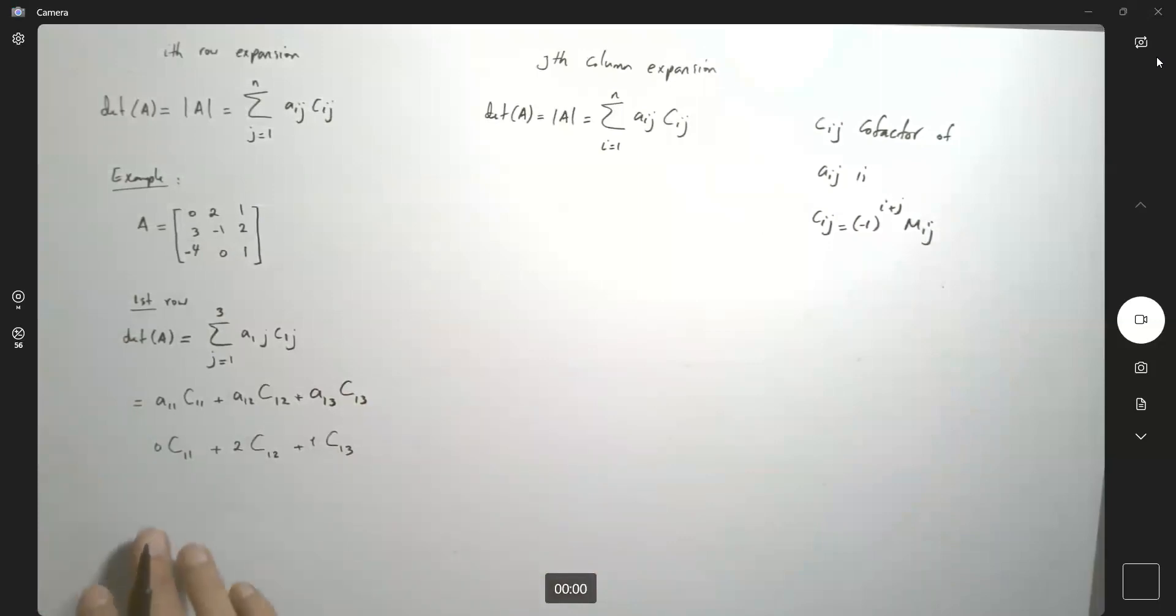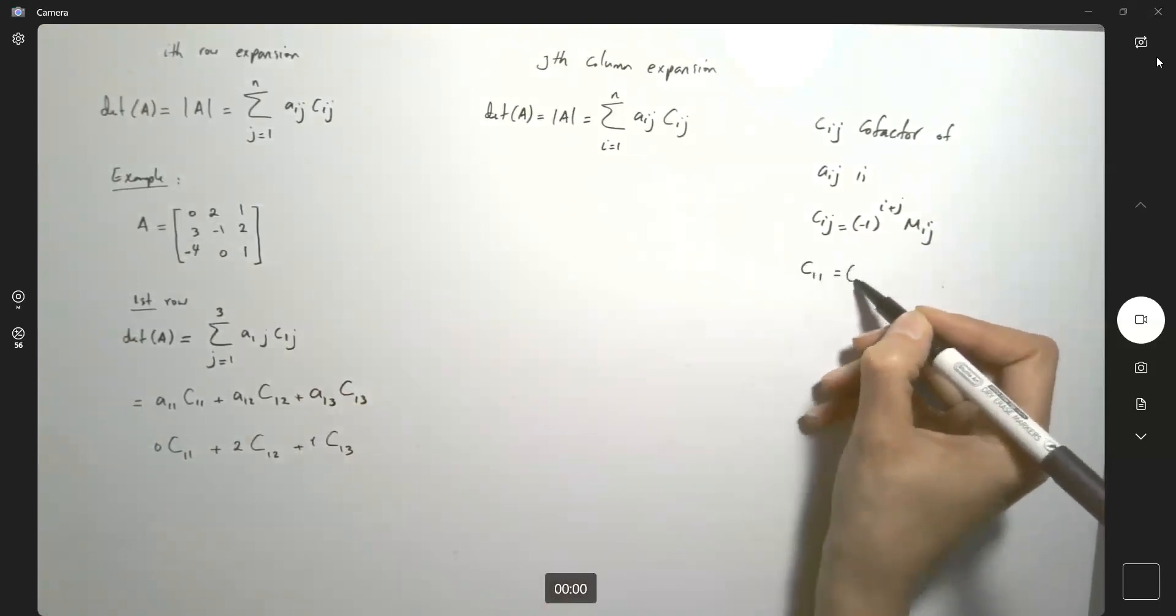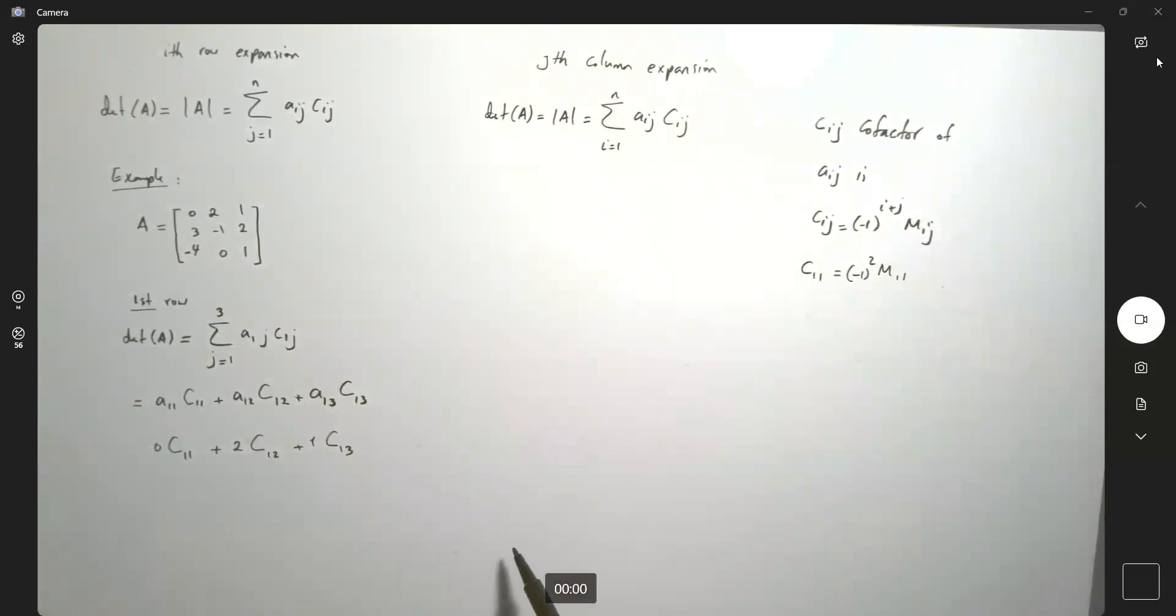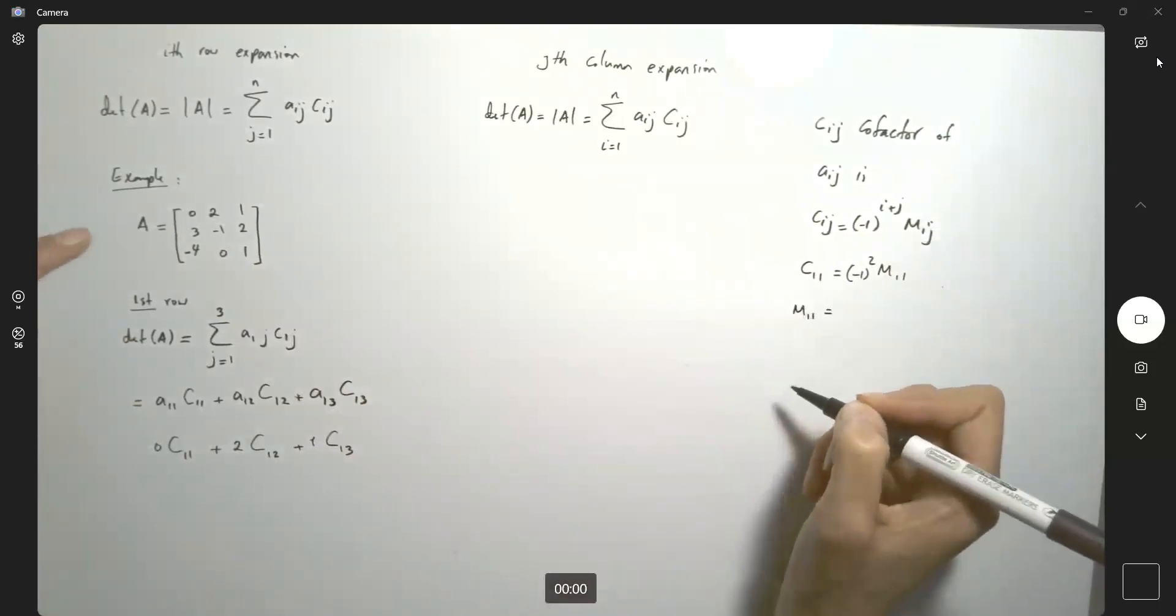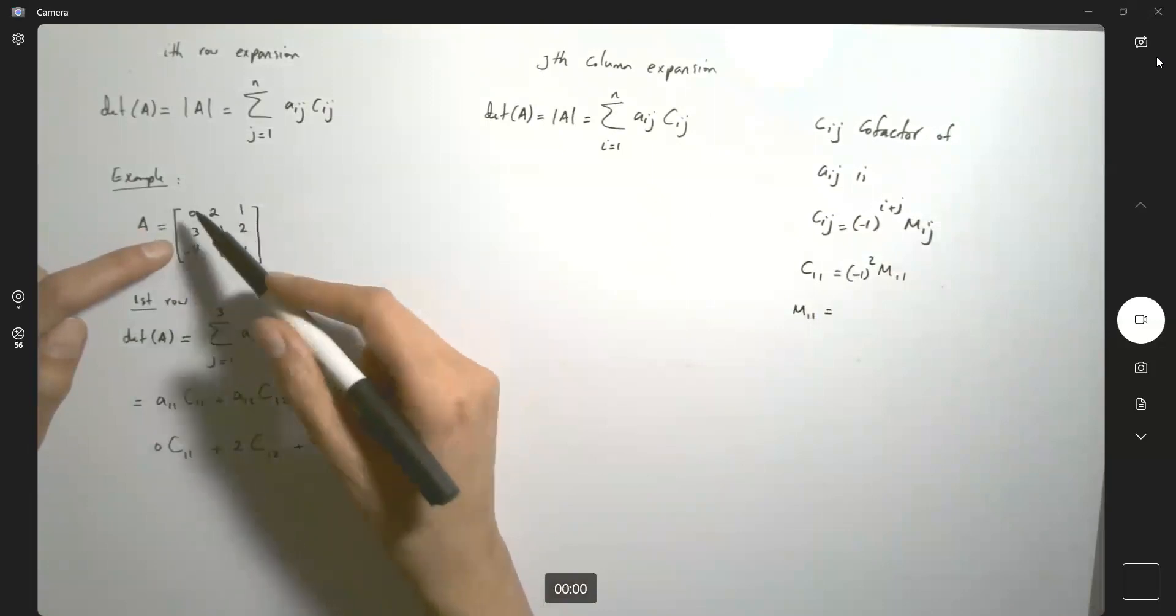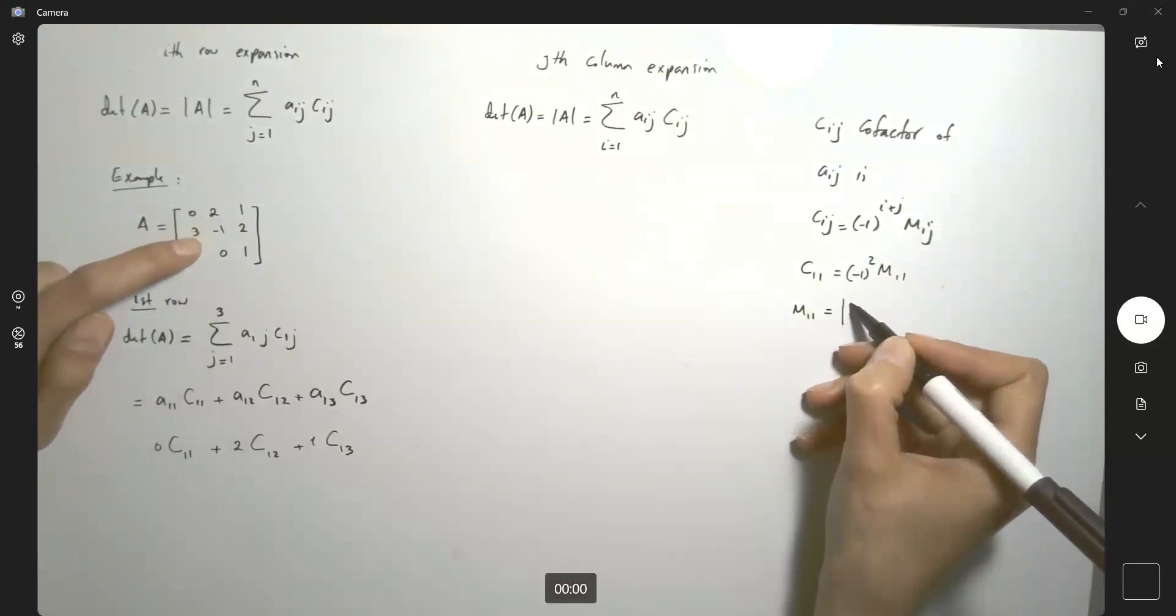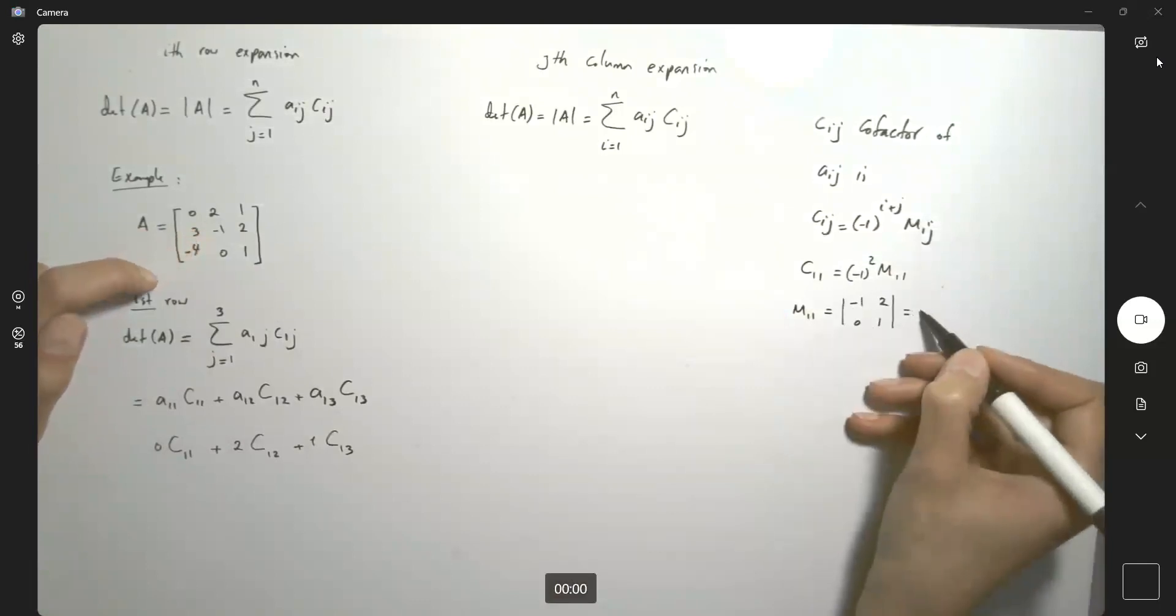Let's start calculating C1,1. C1,1 by definition is (-1)^2 times M1,1. So what is M1,1 in this case? Here you need to find the determinant of the matrix by eliminating the first row and the first column. This is going to be the determinant of -1, 2, 0, and 1, which is negative 1.